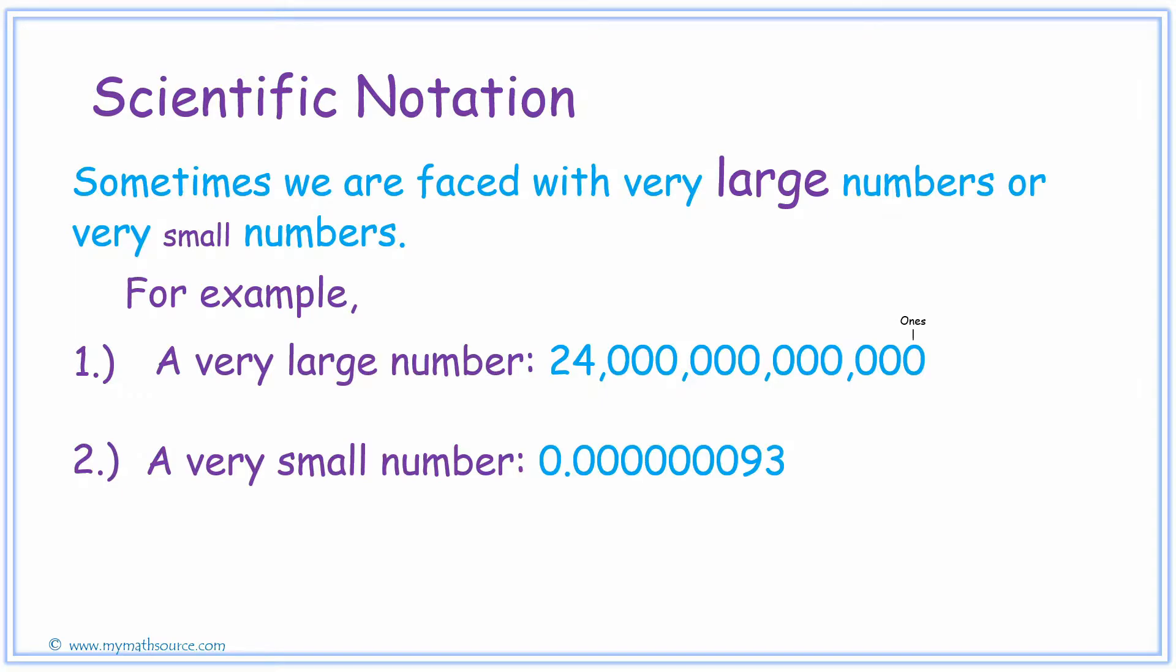The first zero is in the ones place. The second zero is in the tens. Then we have the hundreds, thousands, ten thousands, hundred thousands, millions, ten millions, hundred millions, billions, ten billions, hundred billions, trillions, and ten trillions.